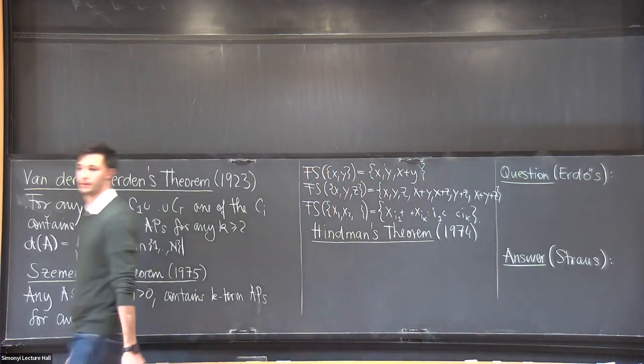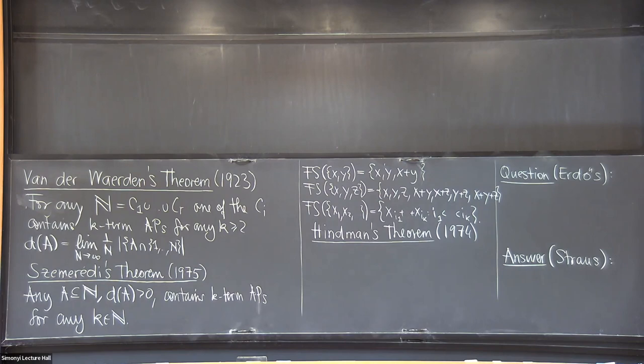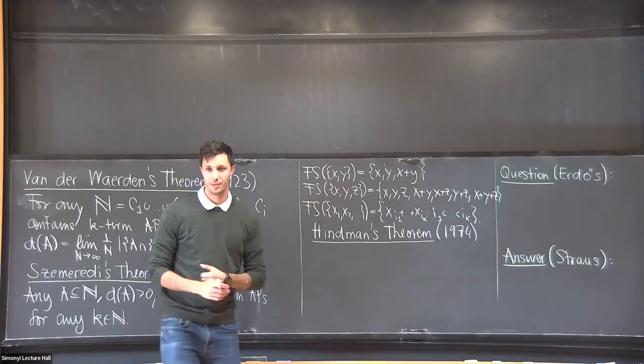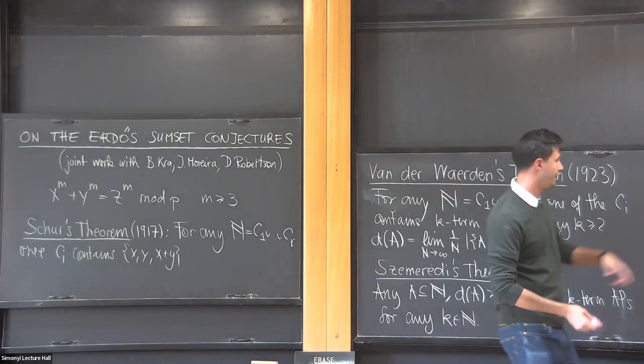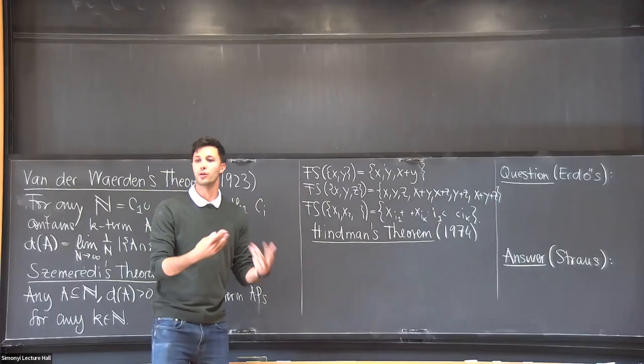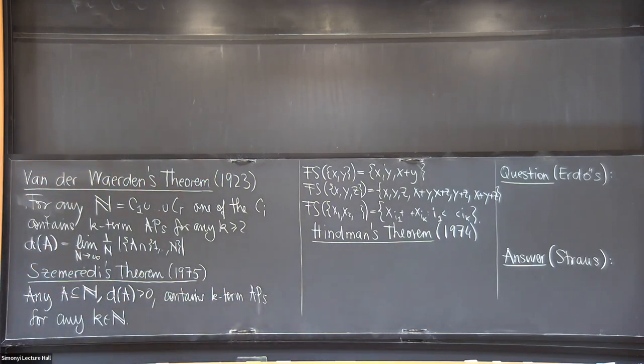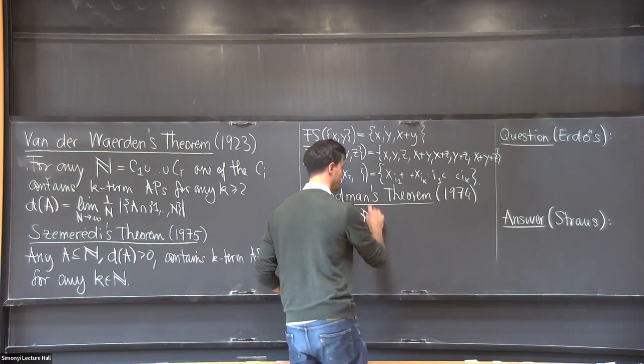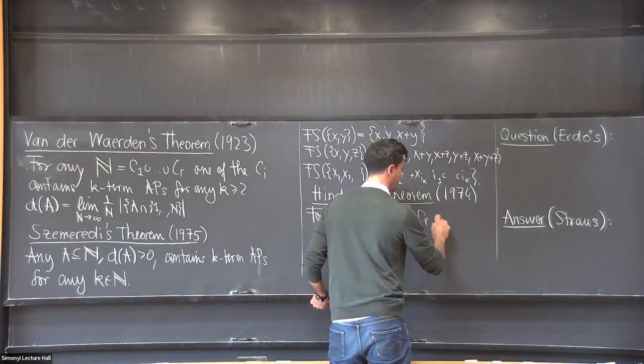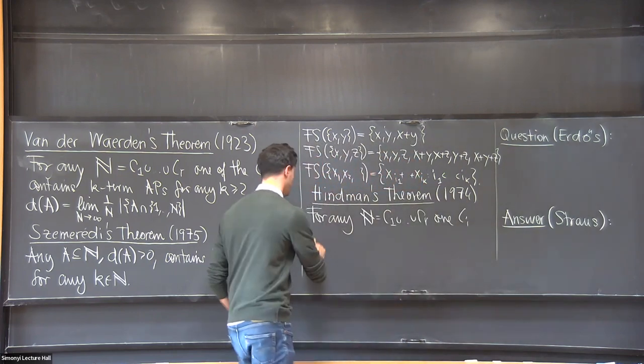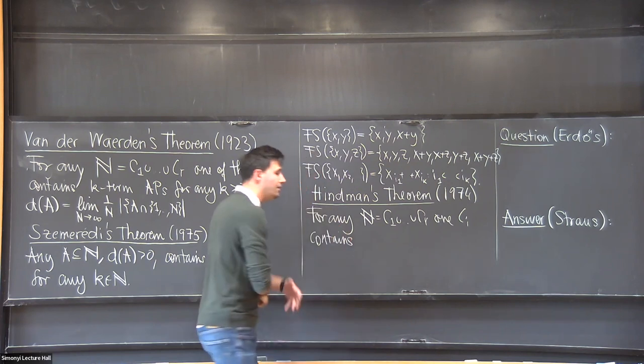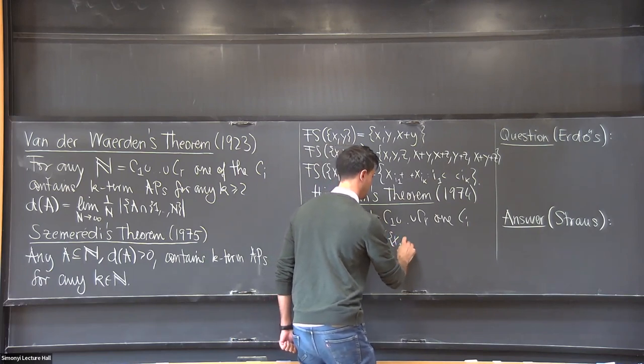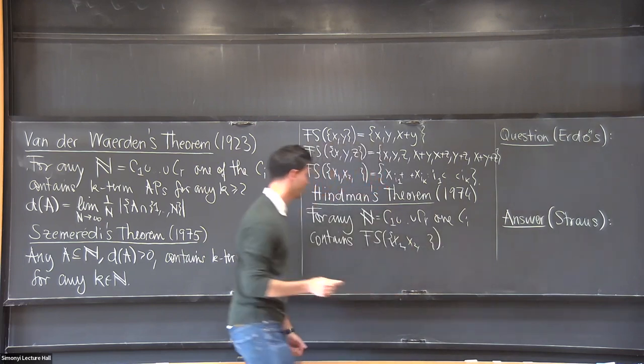I hope this makes sense. So what Schur said in this language is that for any finite coloring, I can find a monochromatic set of this type. But actually the very same proof shows I can find a monochromatic set of this type or as a matter of fact all finite length. But that left open the question: what about infinite? And that's what Hindman showed. For any finite coloring, one of the colors contains an infinite sequence together with all its finite sums.